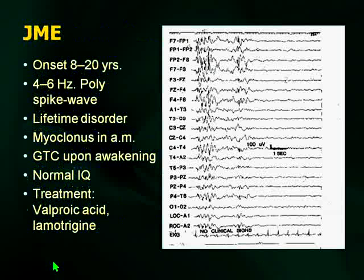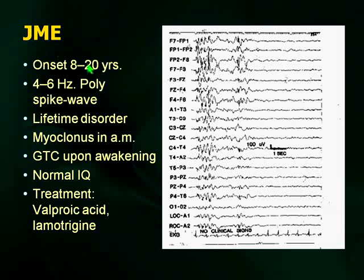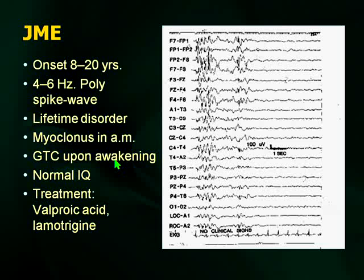One of the common idiopathic generalized epilepsies is juvenile myoclonic epilepsy, or JME. This is fair game for your examination — it's a relatively benign seizure syndrome and very common. It comes on at 8 to 20 years. The EEG hallmark is 4 to 6 hertz poly spike wave — these are generalized discharges. These are the kids that have myoclonus in the morning: they drop their toothbrush, sling pencils across the room in morning classes. Generalized seizures upon awakening, normal IQ. Valproic acid is the treatment of choice.